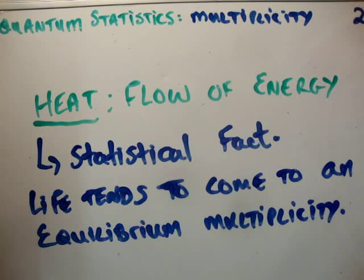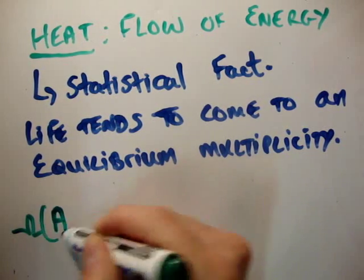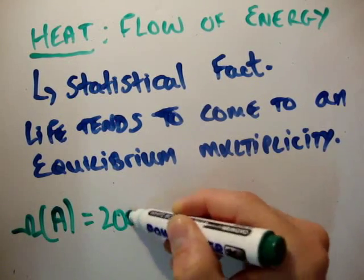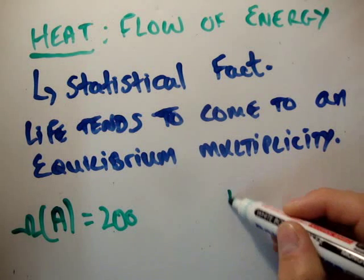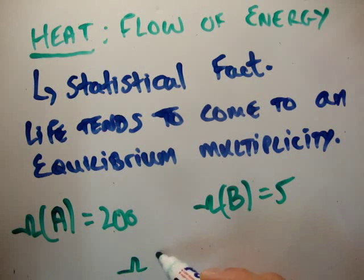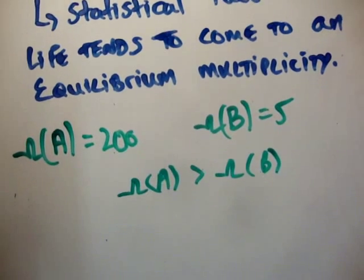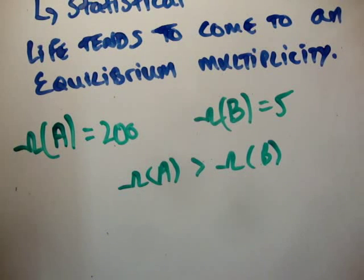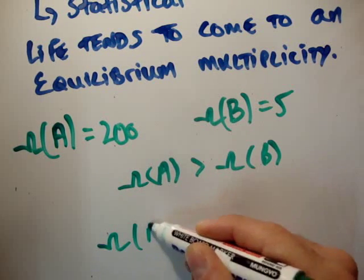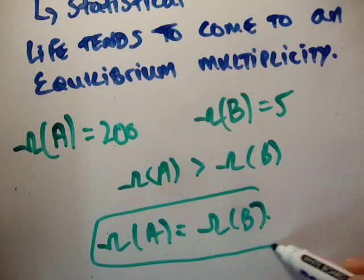So, that means that if two bodies, if one has a greater multiplicity, or number of ways of arranging something, then if body A has a multiplicity, let's say, of 200, so there are 200 ways of arranging all the things inside A, and B has a multiplicity of, let's say, 5, well, then the multiplicity of A is greater than the multiplicity of B. And when you put the two of these bodies in contact, what life will try and do is have omega A equal to omega B. That's what life will try and do.